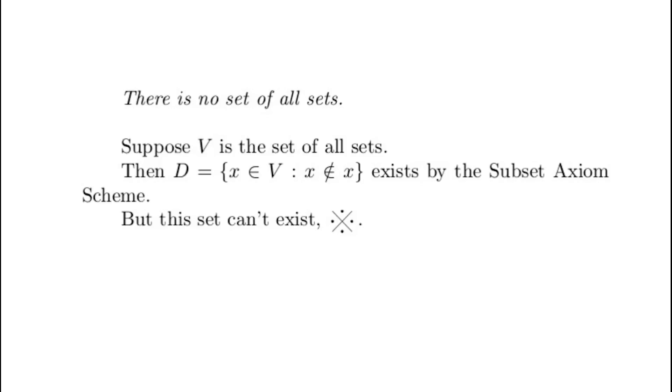Suppose V is the set of all sets. Well, in that case, we can apply the subset axiom scheme and define the set D as the set of all x in big V such that x is not a member of itself. But because V is the set of all sets, D is simply the set of all sets that are not members of themselves. It's a Russell's paradox set, and we've already seen that that set can't exist.